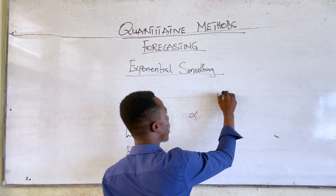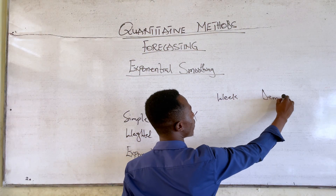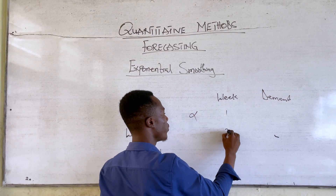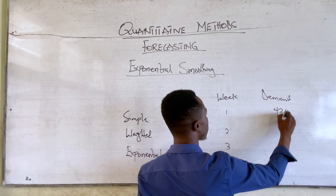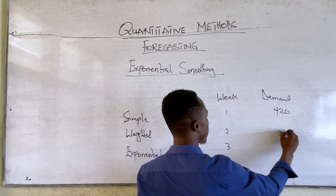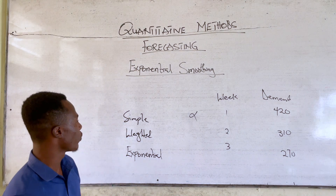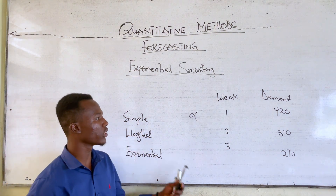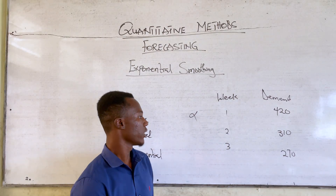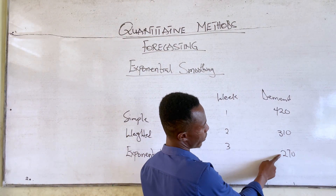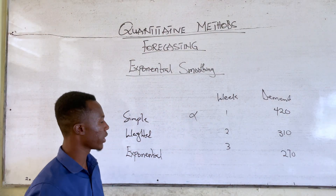Suppose we have week and demand. We have week 1, week 2, week 3, with demand of 200, 300, and 270. For the simple moving average moving 3 weeks, it means we use the past 2 weeks to forecast for the 4th period. For the weighted moving average, similarly, we use the past 2 weeks to forecast.